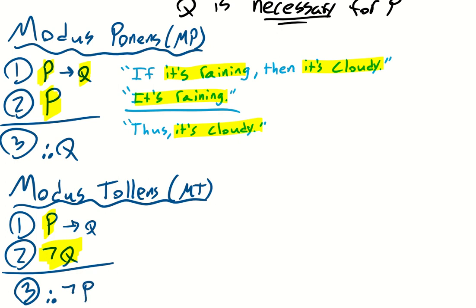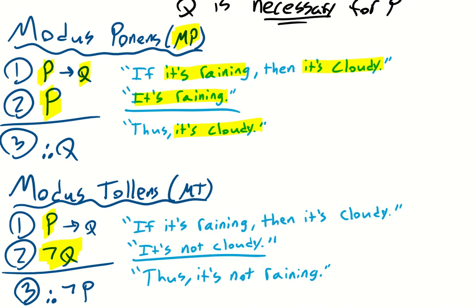That makes sense. If q is not the case, there's no way p can be the case. Moreover, if p were the case, we would be back at a modus ponens inference and q would be the case. But we know by premise two that q is not the case — so p cannot be the case. For example: if it's raining, then it's cloudy. It's not cloudy — thus it's not raining.